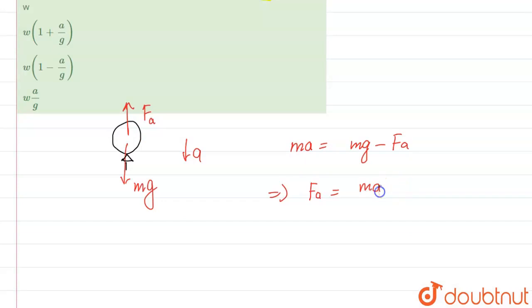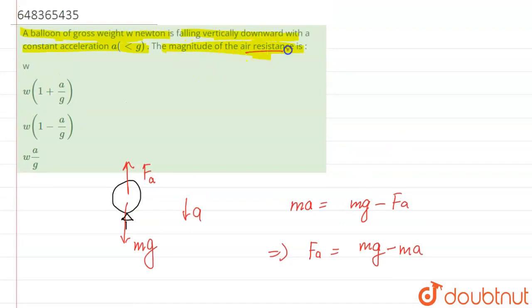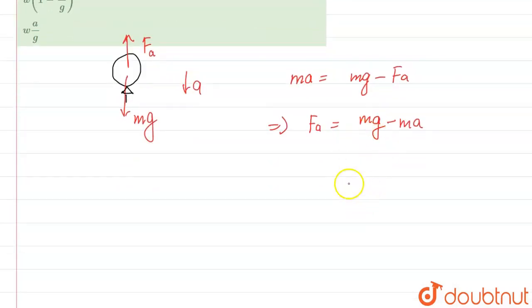Basically, not ma - it will be mg minus ma. What we needed is the magnitude of air resistance. We needed this only, but we have to take it out in those terms.